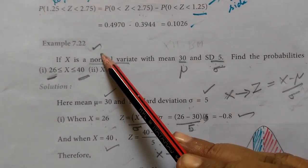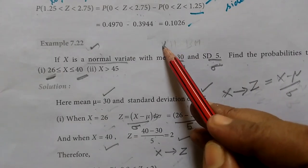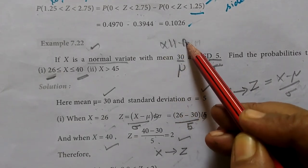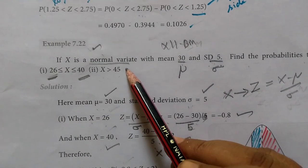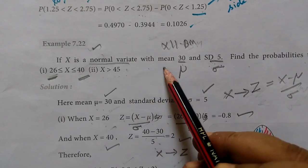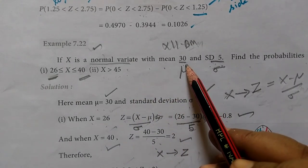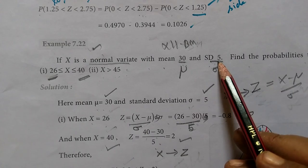12th Business Math, Example 7.22. Here you are given: if X is a normal variate with mean 30 and standard deviation 5.